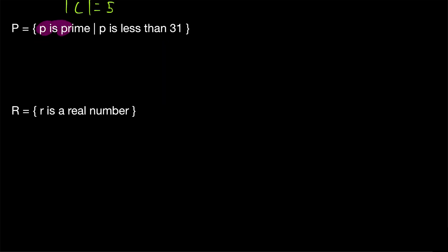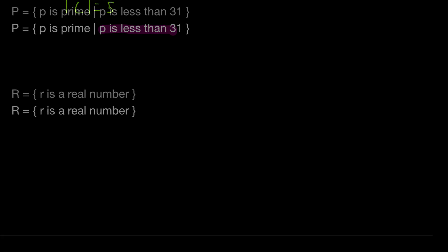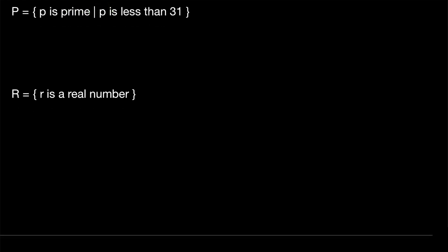Our set P contains all prime numbers that are less than 31. Recall that prime numbers are integers greater than one whose only factors are one and themselves. So if we start writing out our set P, two is the first prime number, then we have three, then five, then seven, then 11, then 13, then 17, then 19, then 23, then 29, then 31. But wait a minute, we don't actually want 31 in our set because our set only contains primes that are less than 31. So we can actually erase 31. And our set stops at 29. If you're not very familiar with prime numbers, this would take a little longer to figure out.